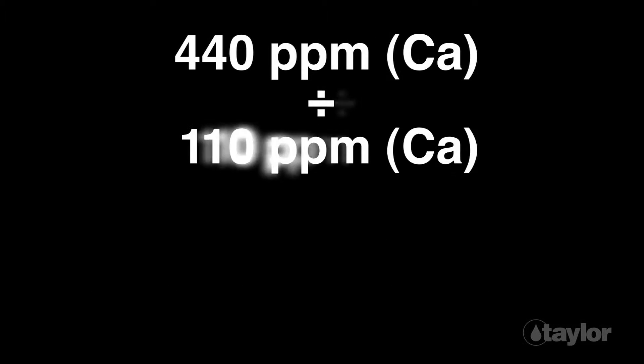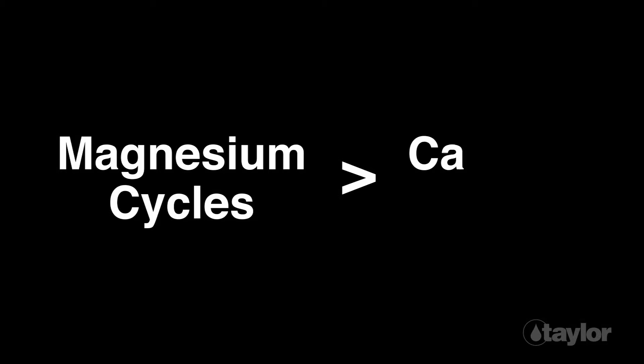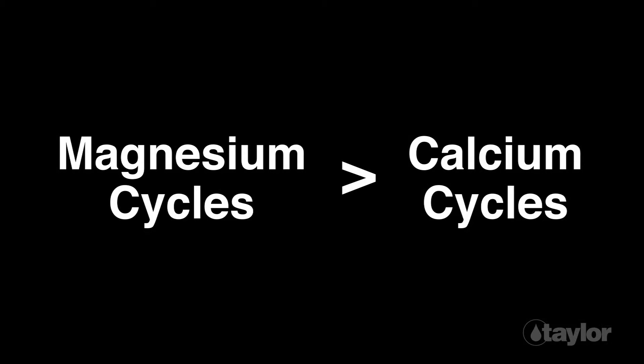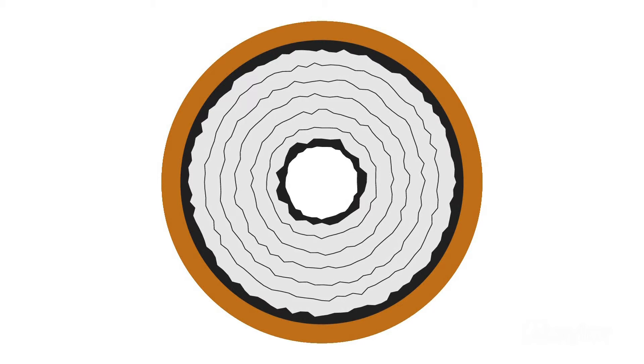If this value is similar to that found when dividing the cooling water calcium level by the makeup water calcium level, then you can be reasonably assured that your system is not forming calcium scale. However, if the value from the magnesium calculation is noticeably higher than the calcium calculation, then the system may be experiencing calcium scale formation.